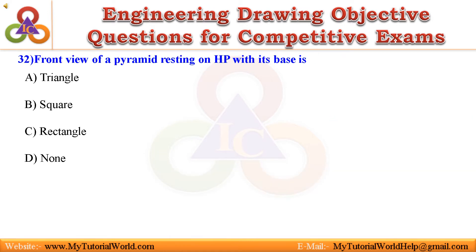Question 32. Front view of a pyramid resting on HP with its base is: A. Triangle, B. Square, C. Rectangle, D. None. Answer is: Triangle.